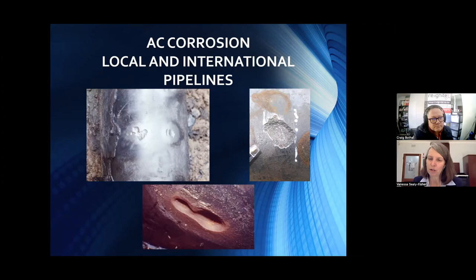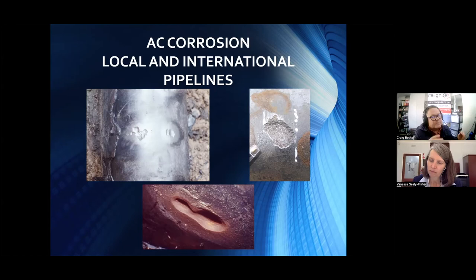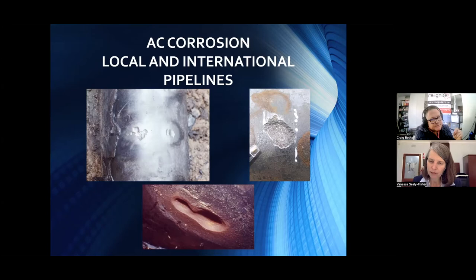A question just received: is the AC current density measured over the area of the pipeline itself or just the bare steel at the coating defect? When we refer to current density in cathodic protection application, it's often per square meter of coated pipe. But when analyzing AC current density, we are referring to exposed defect sites — the steel surface exposed through coating defects. The current density is calculated over the exposed steel surface.